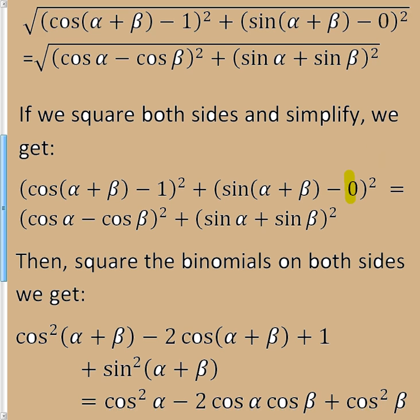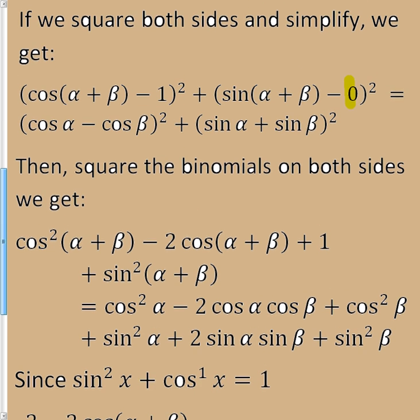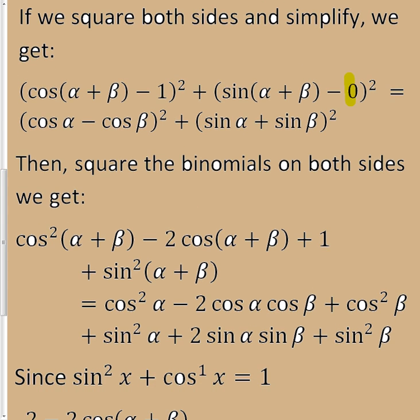If I keep going and square out the right-hand side, I'm going to get a perfect square trinomial: cosine squared alpha minus 2 cosine alpha cosine beta plus cosine squared beta. And the same with sine alpha plus sine beta squared—it's a perfect square trinomial: sine squared alpha plus 2 sine alpha sine beta plus sine squared beta.